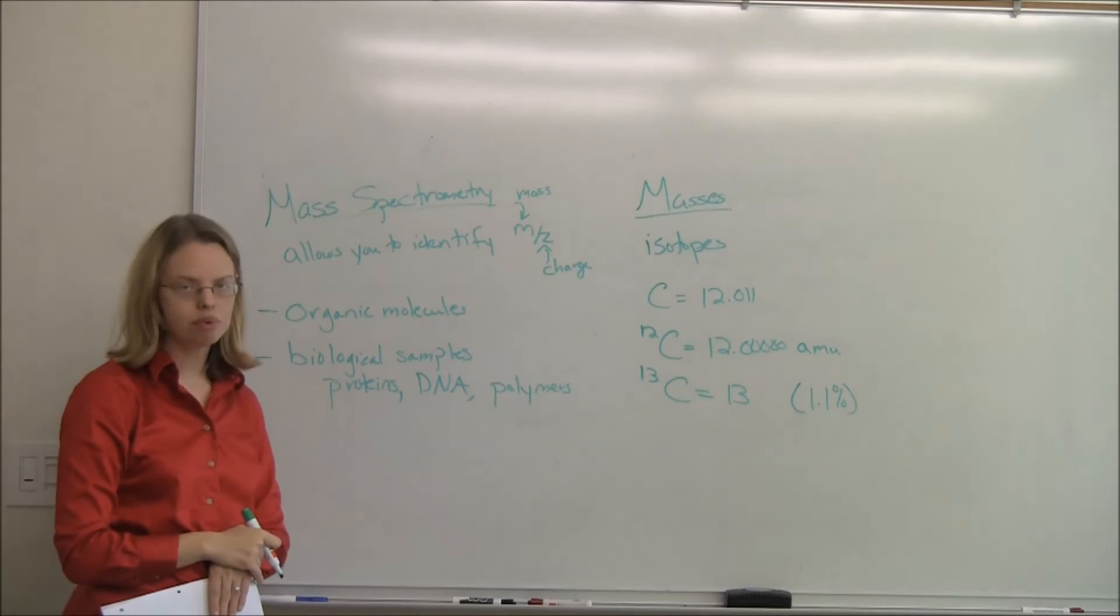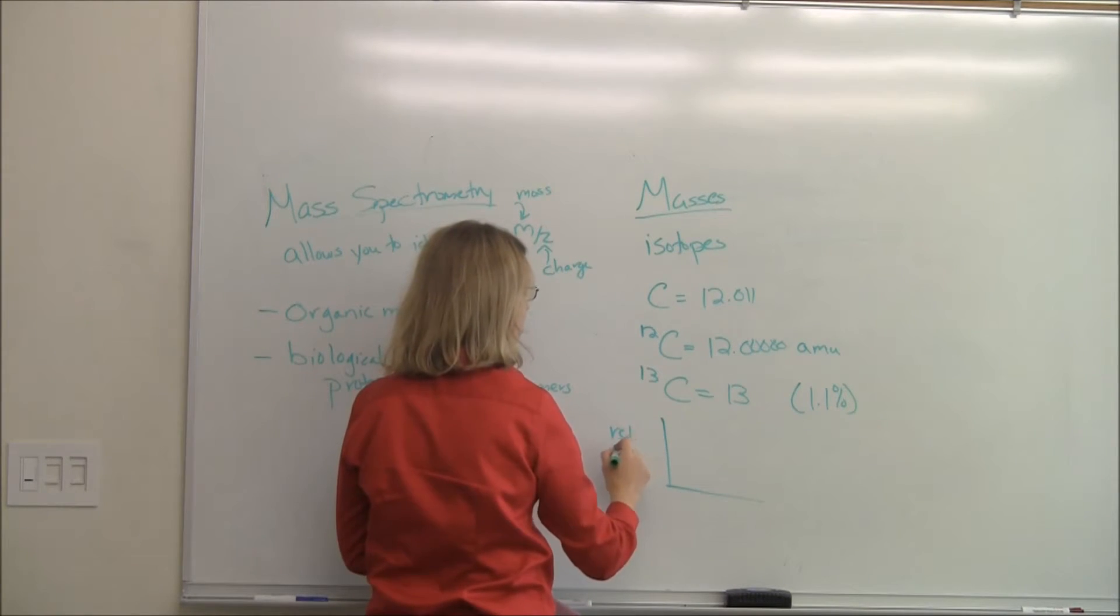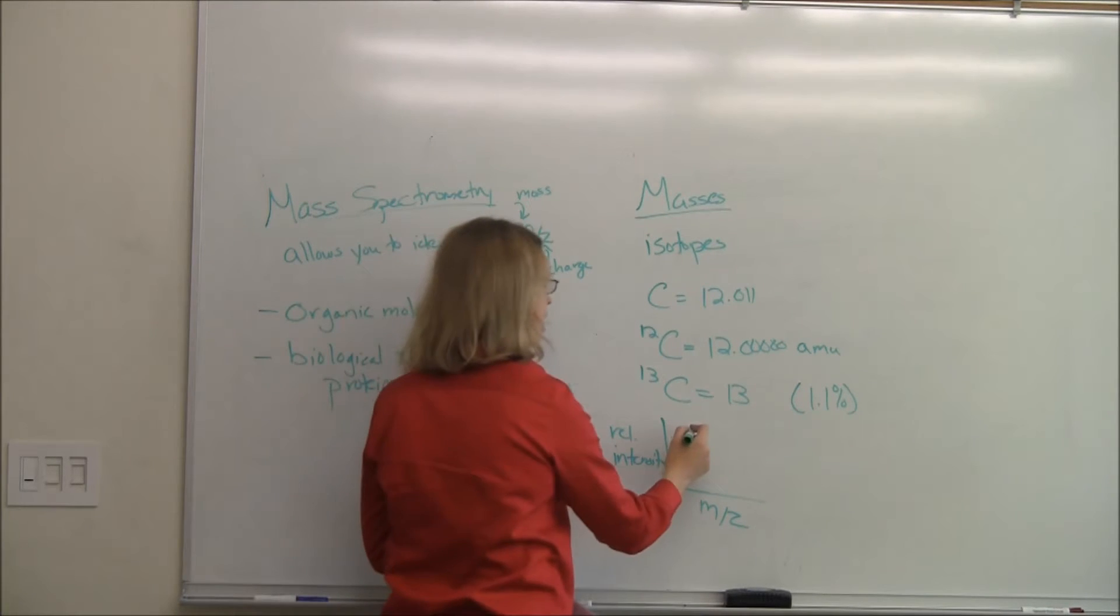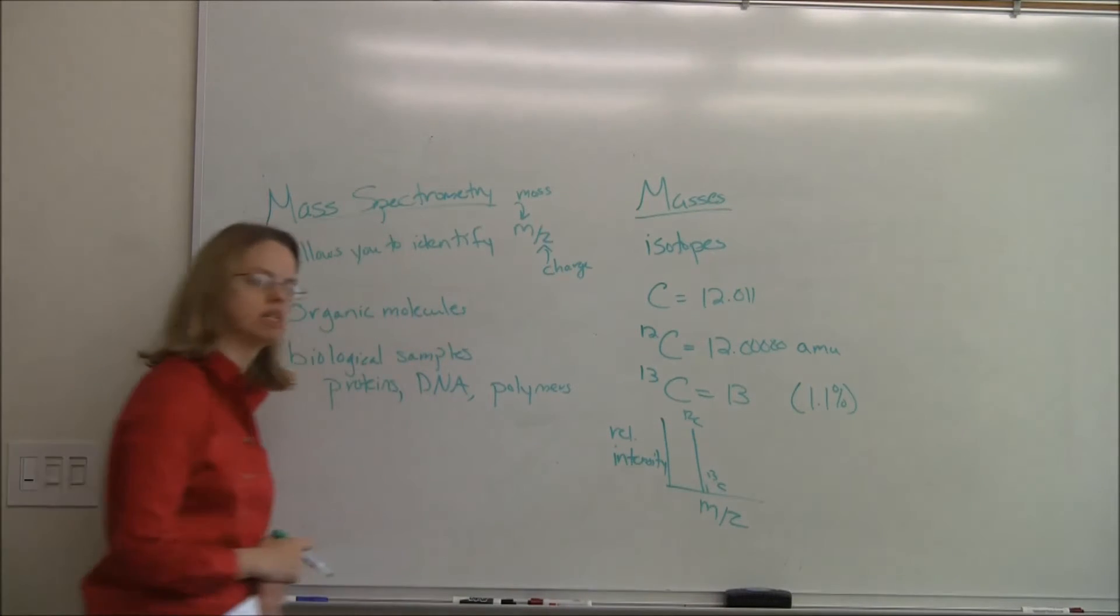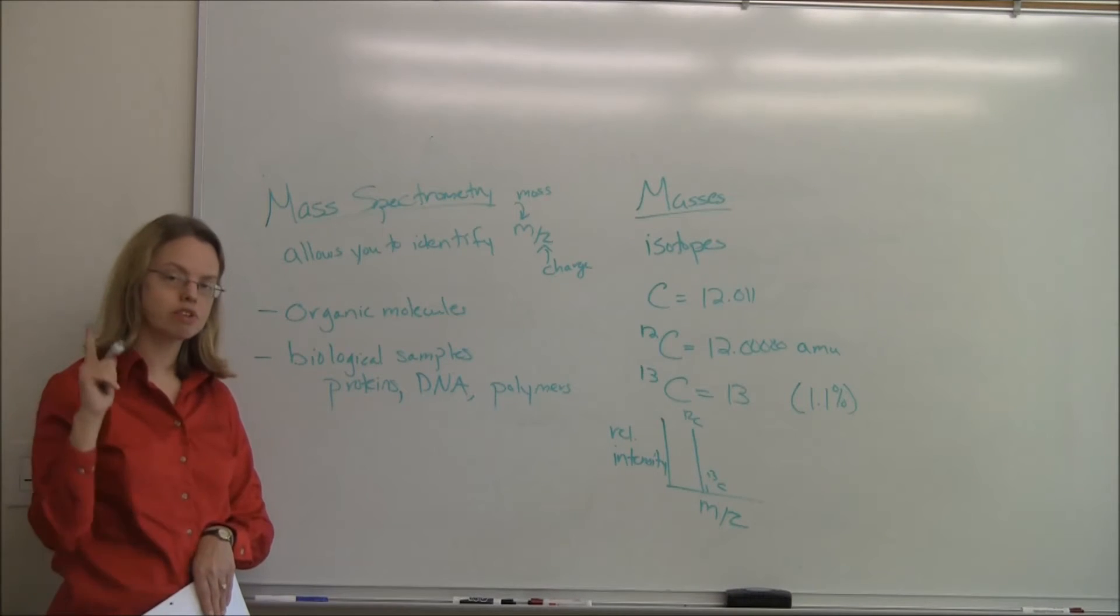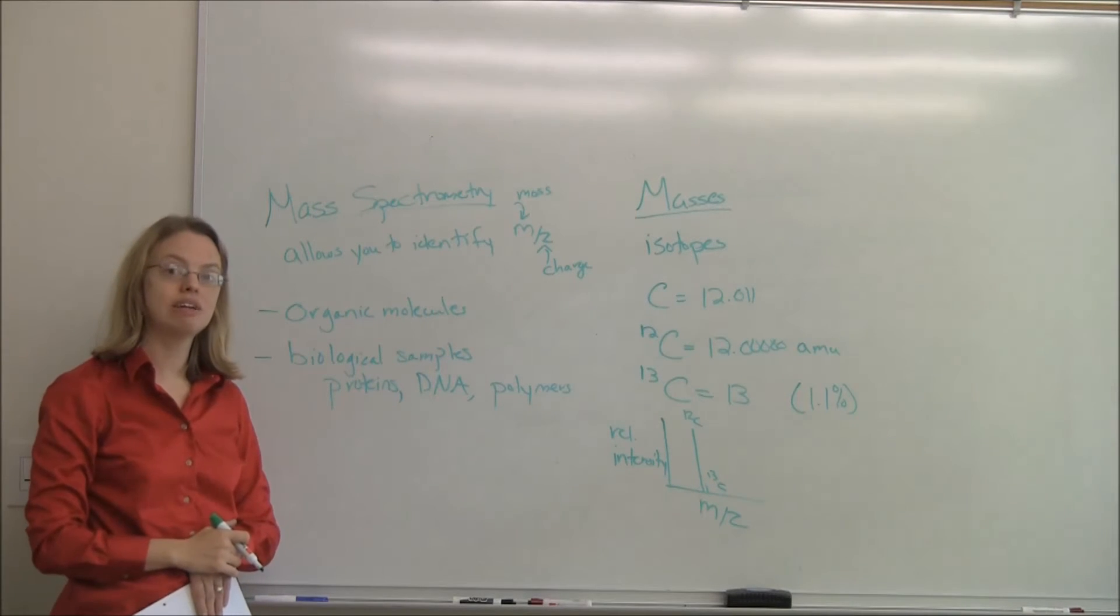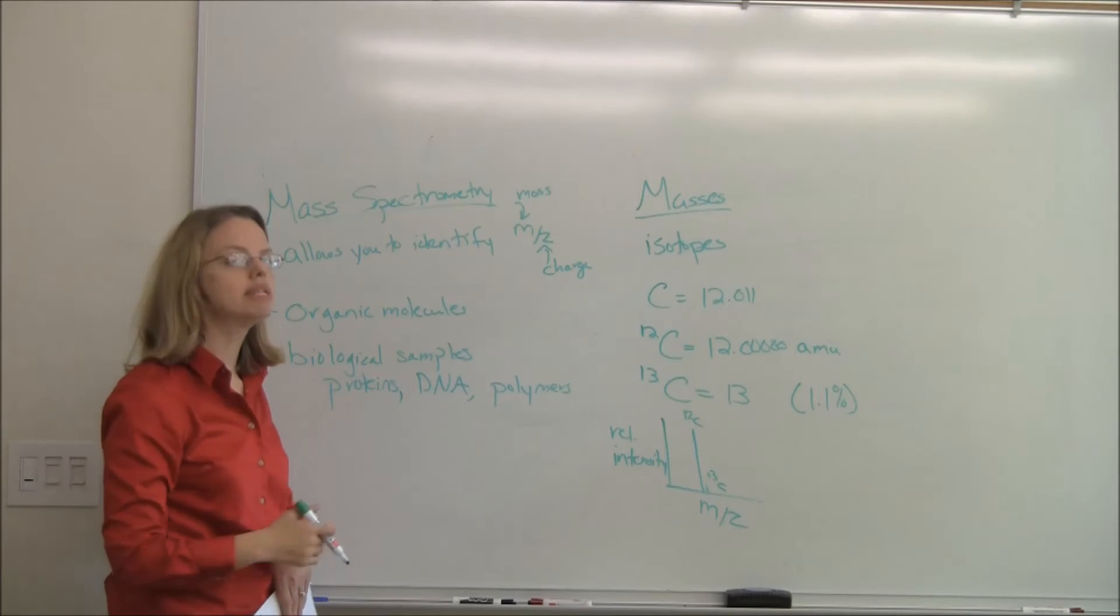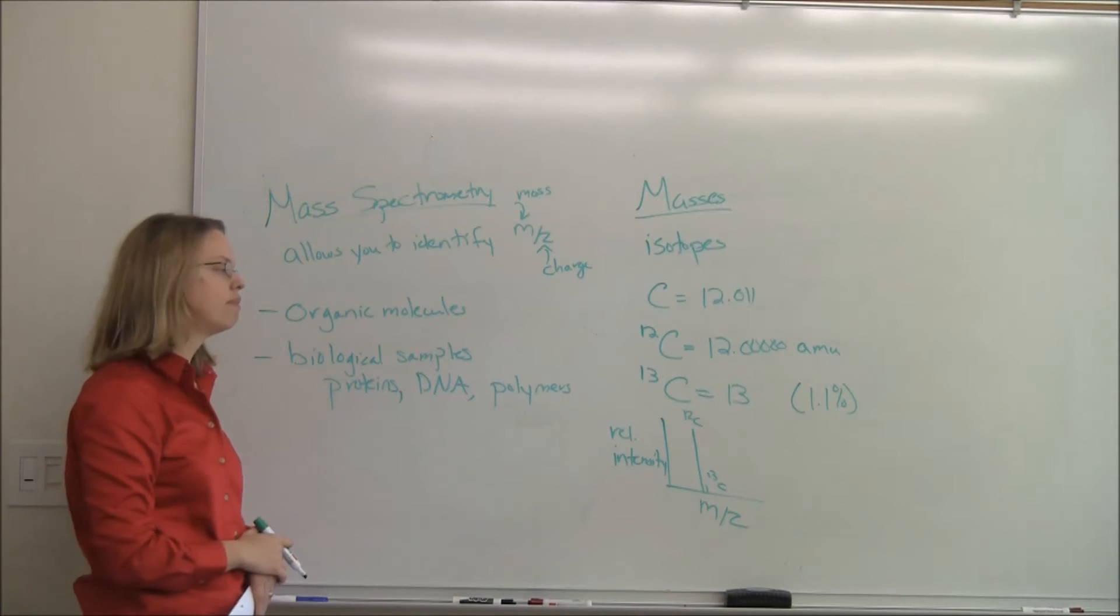But that does not mean that any carbon ever weighs 12.011. So in a mass spec, if we were going to look at carbon, the y-axis is always relative intensity, how much we have there. The x-axis of a mass spectra is always M over Z. And we have a big peak for carbon-12 and a little peak, 1% of it, for carbon-13. So we get two separate peaks for just one thing. And so that's really important to know when you're interpreting mass spectra. The size of that carbon-13 peak can let you know how many carbons you have in your sample. So that's actually pretty useful for identifying things. If it's 6%, that means you probably have six carbons that you're looking at.